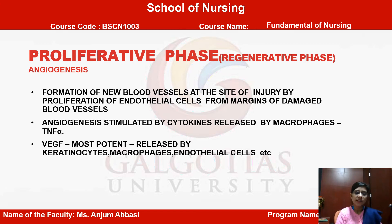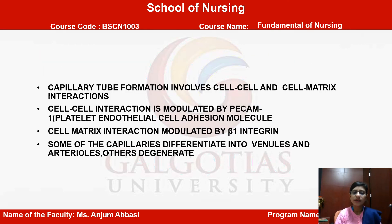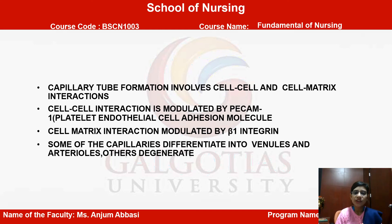Next is angiogenesis — the formation of new blood vessels at the site of injury by proliferation of endothelial cells from the margins of damaged blood vessels. Angiogenesis is stimulated by cytokines released by macrophages, such as TNF-alpha. VEGF is the most important factor, released by keratinocytes, macrophages, and endothelial cells. Capillary tube formation involves cell-to-cell and cell-matrix interactions, modulated by PECAM (platelet endothelial cell adhesion molecule) and beta-1 integrin. Some capillaries differentiate into venules and arterioles while others degenerate.